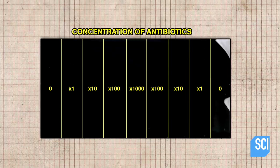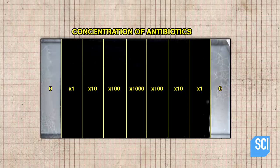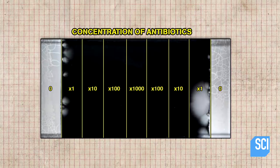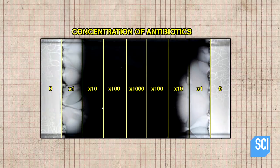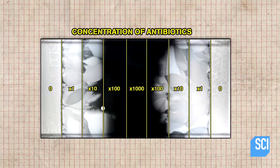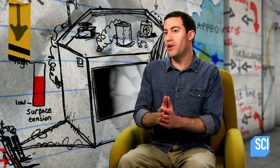Now, there's no antibiotics there, but every few inches, increasing concentrations of antibiotics are added, so that right in the middle, there is 1,000 times the amount of antibiotics required to kill the E. coli.